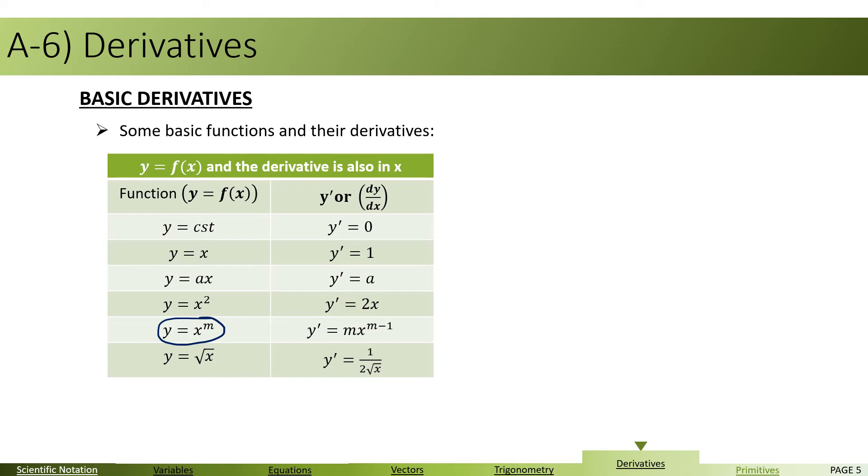This equation which is known as the golden rule of derivatives. So far, y equals x to power m, the derivative becomes m x to power m minus 1, as if the derivative's order or power decreases by 1.